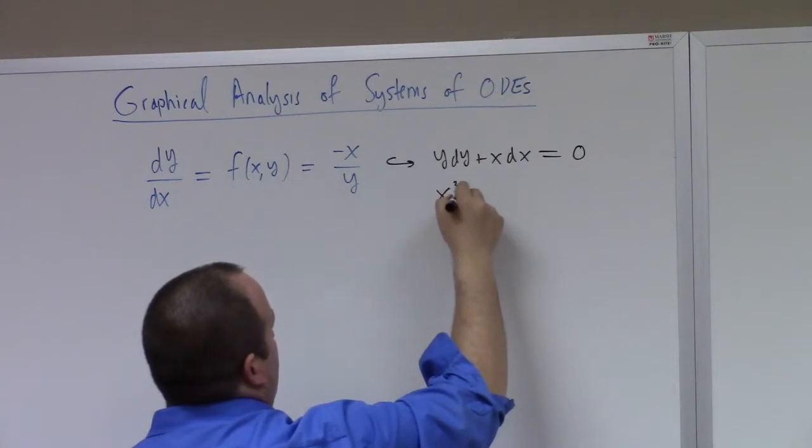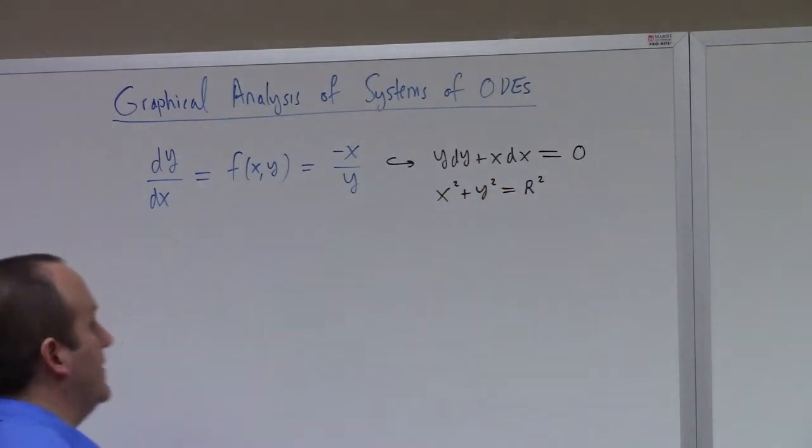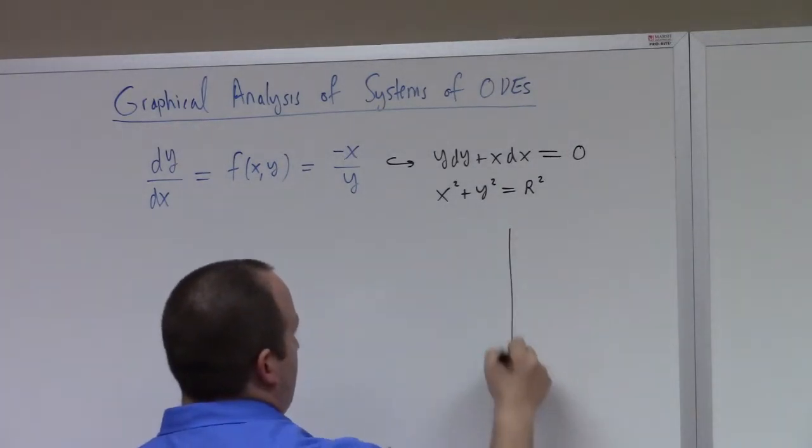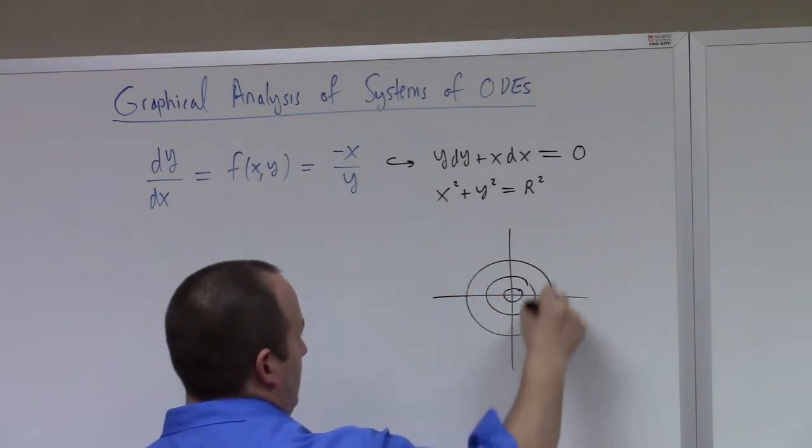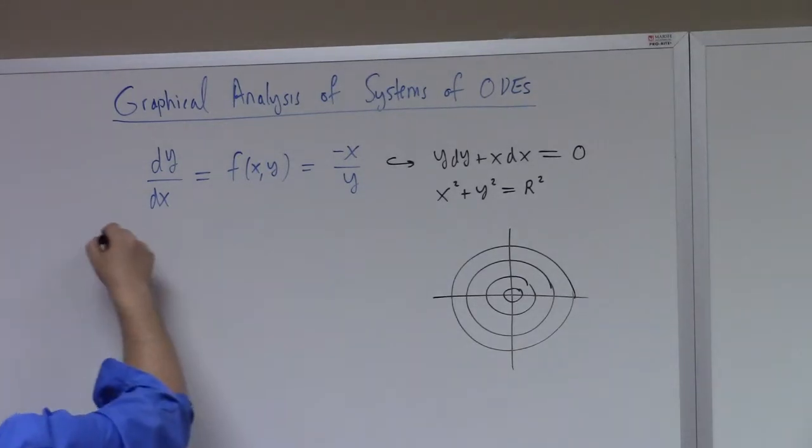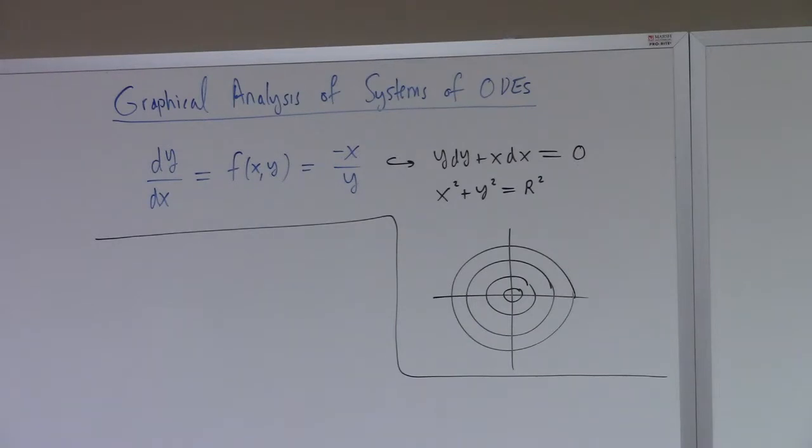So we get X squared plus Y squared equals R squared. And the solutions are circles, right? But are they clockwise circles or counterclockwise circles? Well, they're circles. There's no orientation given.